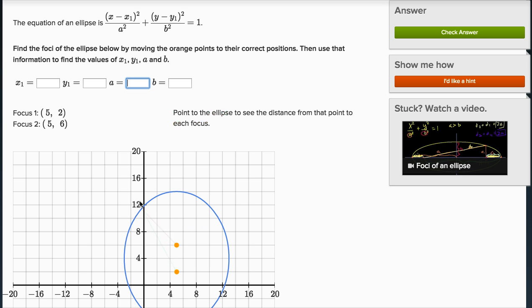So let's work with this. This is an interactive exercise on Khan Academy you see over here. Let's see if we can work through this together and learn a little bit more about ellipses. So they tell us the equation of an ellipse is (x - x1)² / a² + (y - y1)² / b² = 1. And this is true. This is the equation of an ellipse.